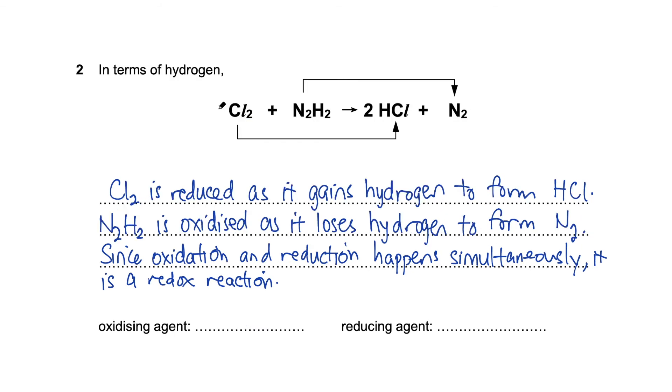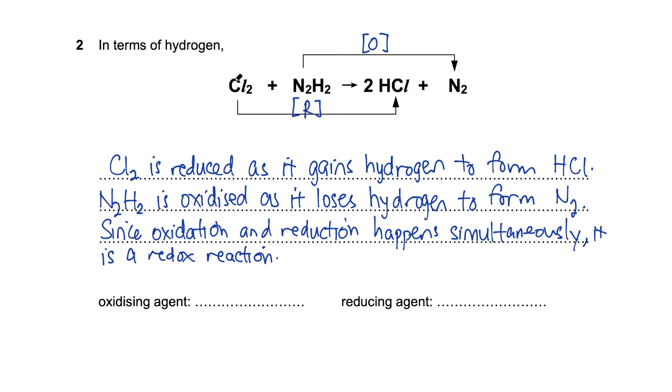In the second reaction, chlorine gains hydrogen to form HCl, therefore chlorine is reduced. Reduction is the gain of hydrogen. N2H2 loses hydrogen to form N2, therefore it is oxidized. Since chlorine is reduced, it is the oxidizing agent. N2H2 must be the reducing agent.